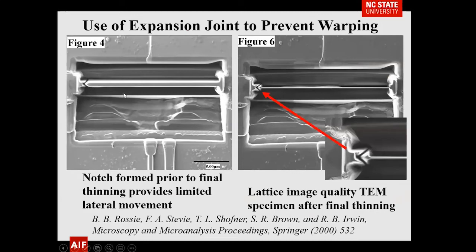If you work with metals and prepare a long section, as you thin it you're removing stress from the material, which risks the section warping. We have seen this occur in a number of examples. What Ben Rossi developed was an expansion joint. Like the expansion joints on the Golden Gate Bridge — estimated to move about 20 feet up and down during the day due to temperature change — this expansion joint allows you to thin the section and any stress in the material will be relieved.